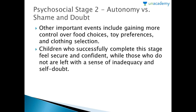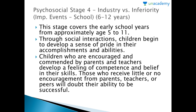Stage 2 is autonomy versus shame, usually seen in toddlers. Important events include gaining more control over food choices, toy preferences, and clothing selection. Children who successfully complete this stage feel secure and confident, while those who do not are left with a sense of inadequacy and self-doubt. Stage 3 is initiative versus guilt, seen in preschool children, where a healthy child learns to imagine, broaden skills through active play, cooperate with others, and both lead and follow.